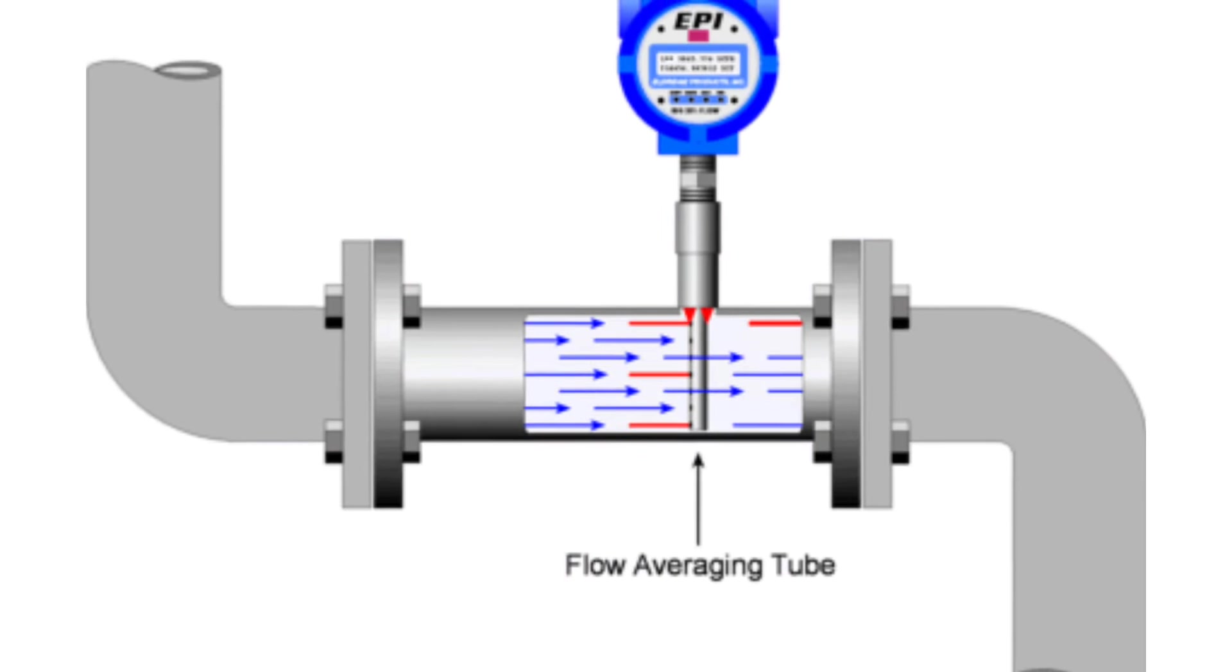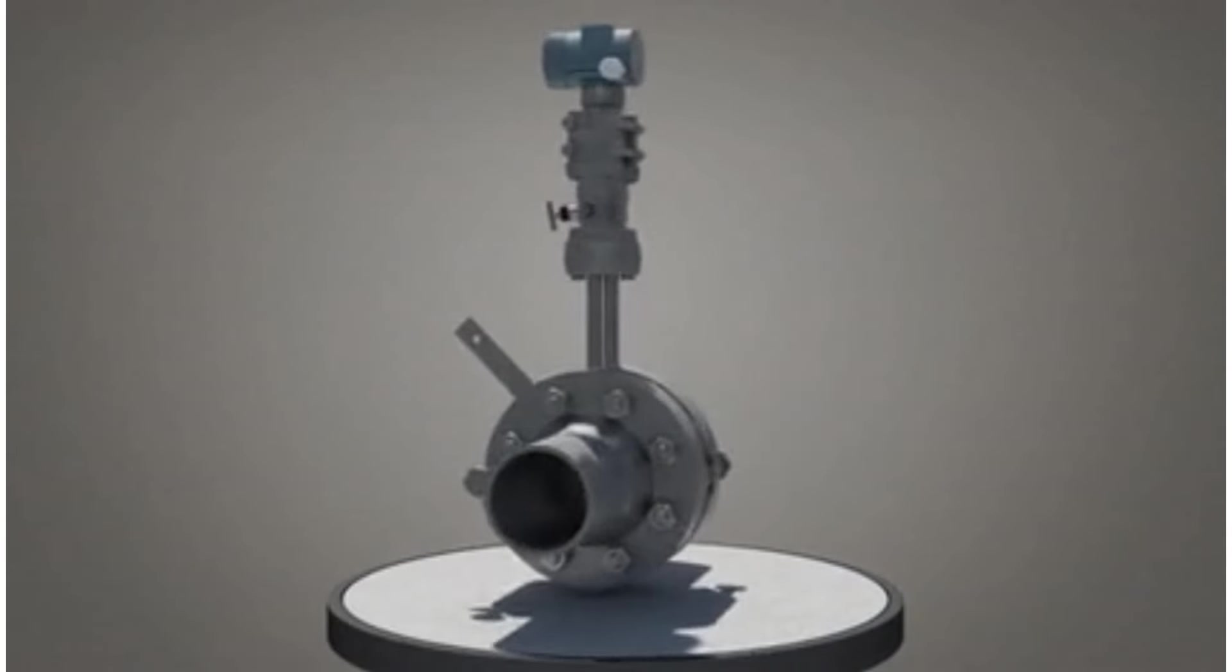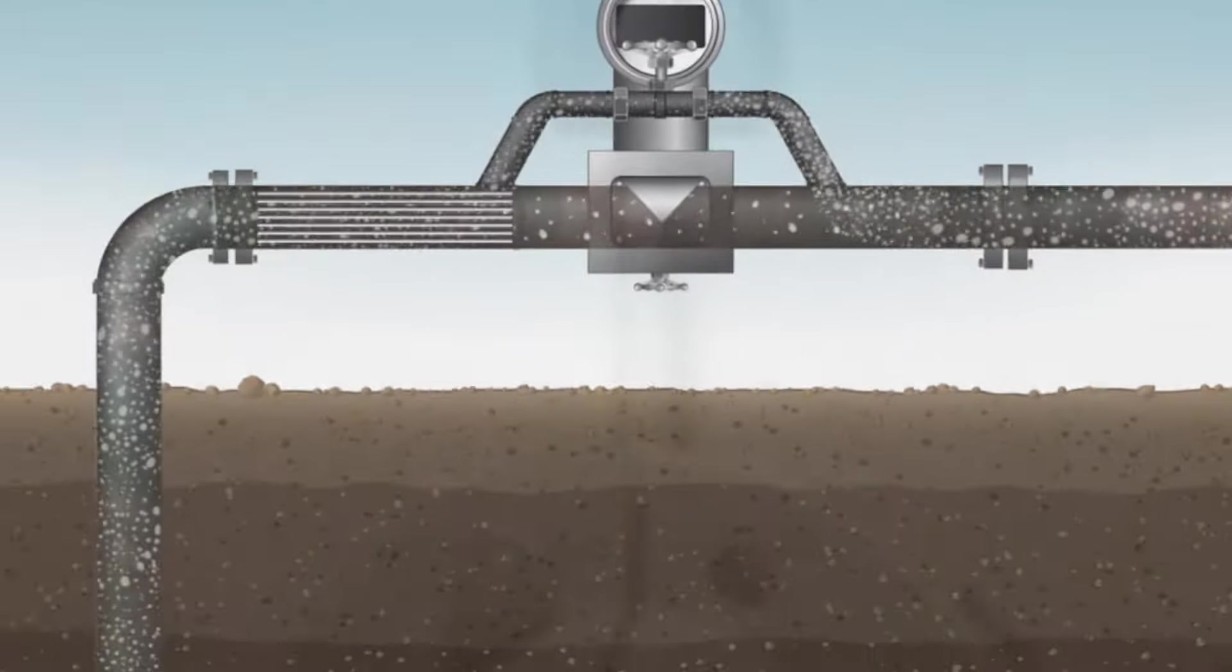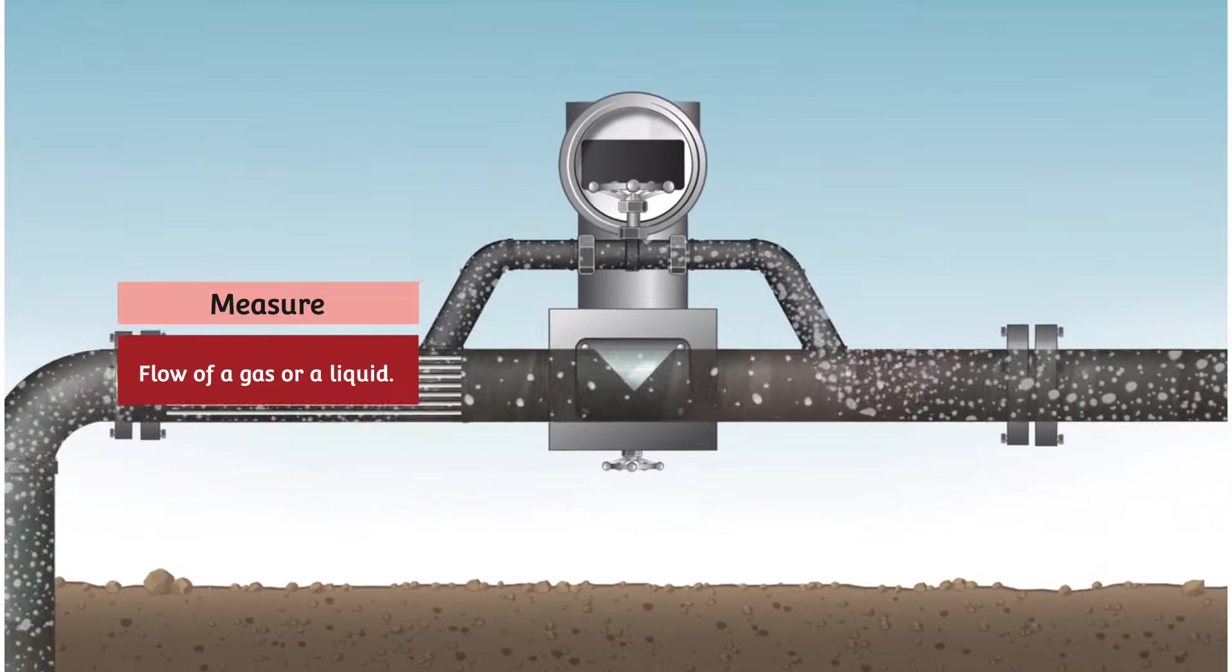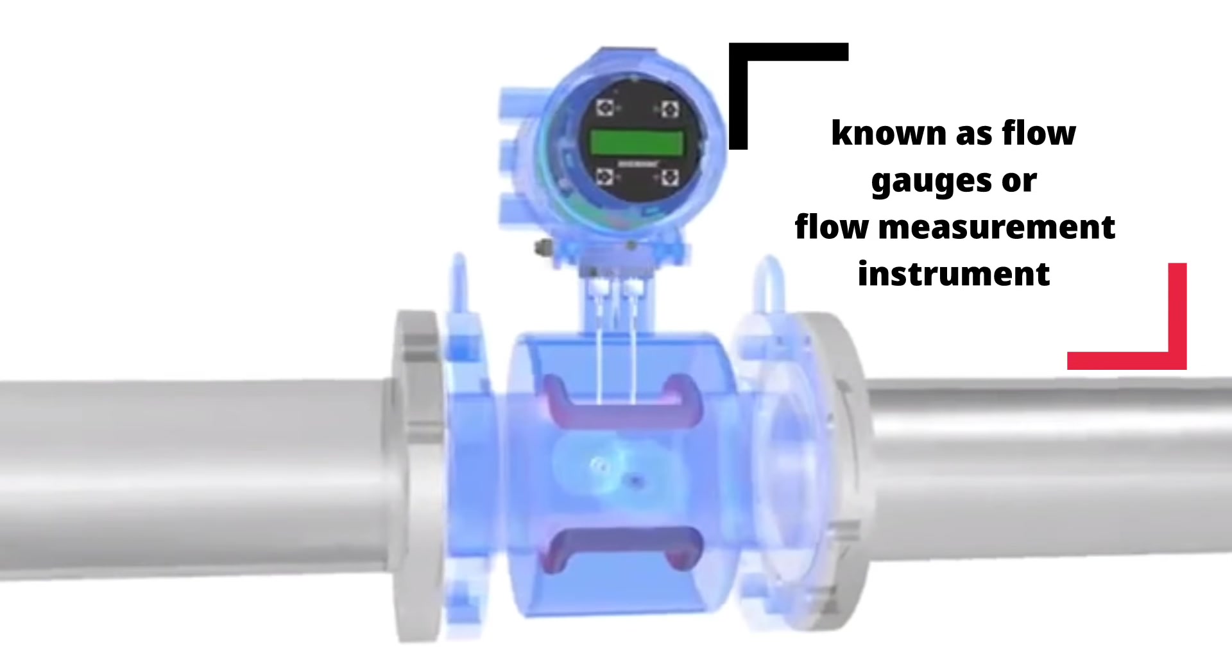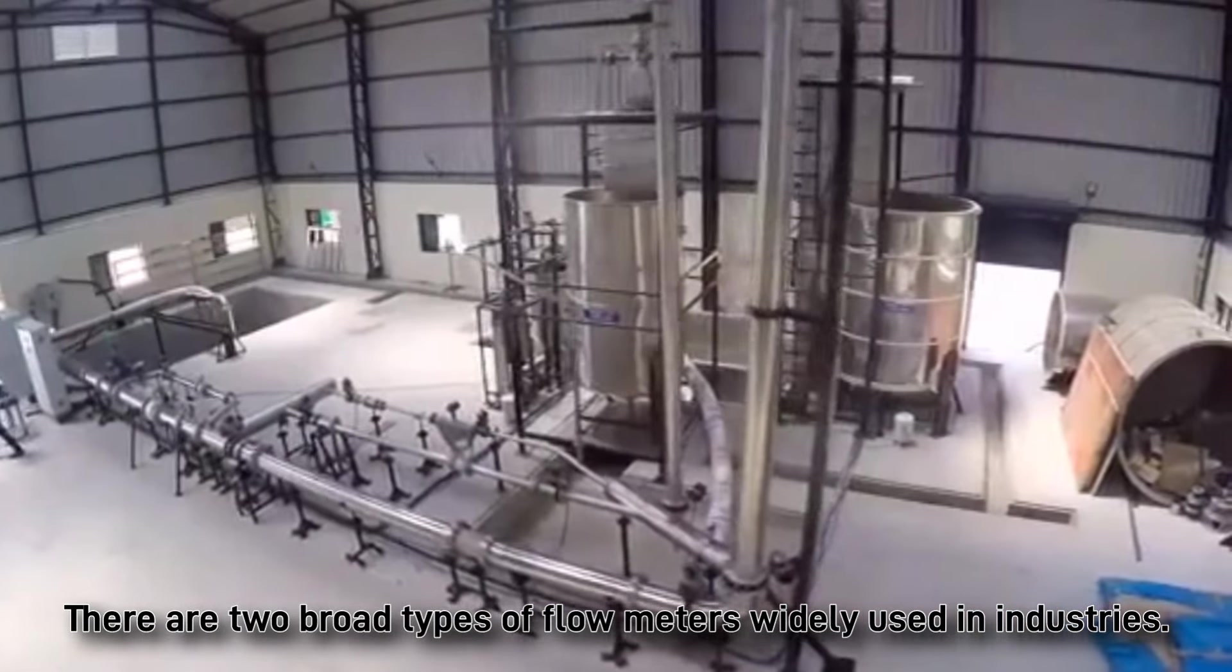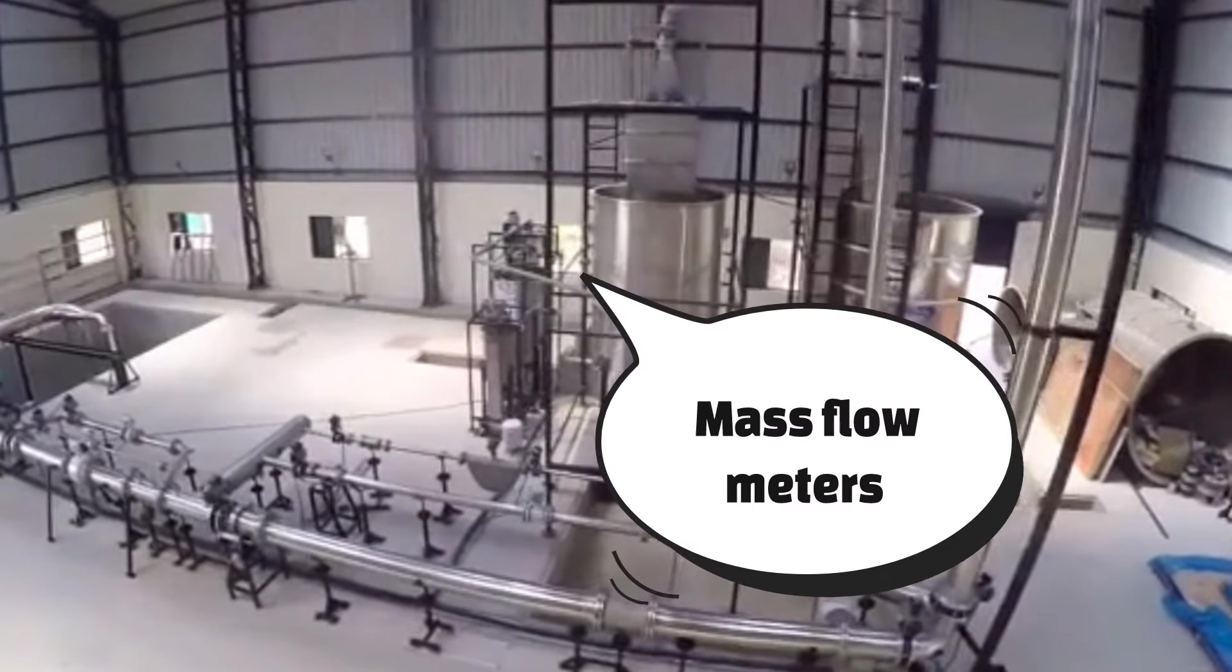Types of flow meters and their industrial applications. A flow meter is a device that measures the flow rate of a fluid. They are flow measuring instruments used to measure the linear, nonlinear, mass, or volumetric flow of a gas or liquid. Flow meters are known as flow gauges or flow measurement instruments. There are two broad types of flow meters widely used in industries: volumetric flow meters and mass flow meters.